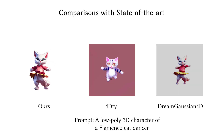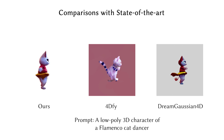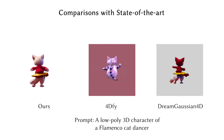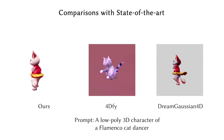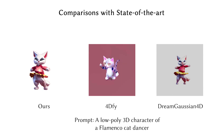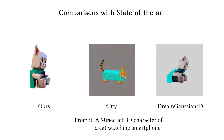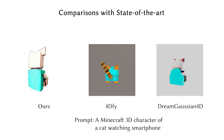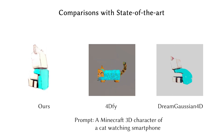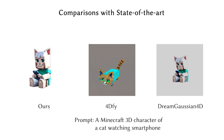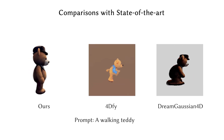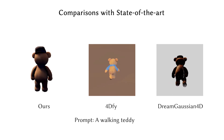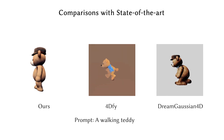Moreover, combined with image and video diffusion models, our method could also adapt to text-to-4D or image-to-4D tasks. Here we show some results compared with other state-of-the-art methods like 4D-FY and Dream Gaussian 4D. Our method shows consistent results and correct geometry in terms of Minecraft style or the walking motion, which can be attributed to our spatial and temporal anchors.